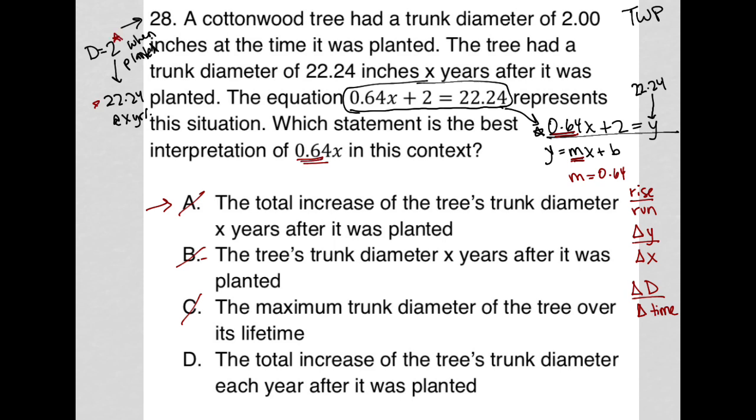So choice D, the total increase of the tree's trunk diameter each year after it was planted. There we go. There's my rate, right? Increase in tree's trunk diameter each year. So there's the rate, there's the slope. Choice D is the correct answer.